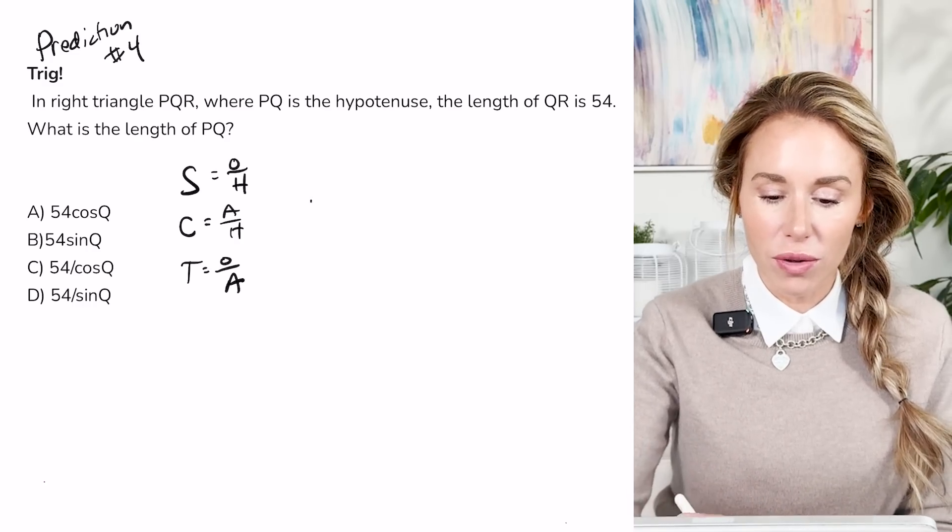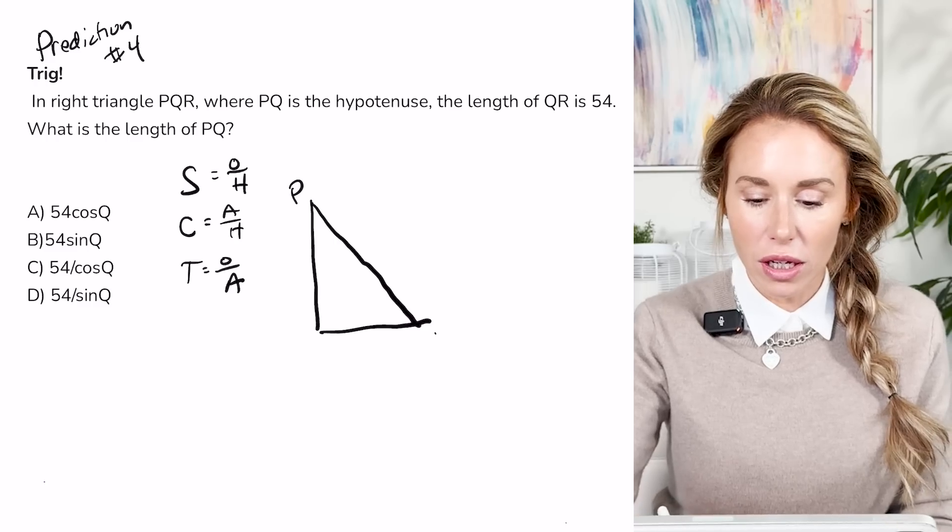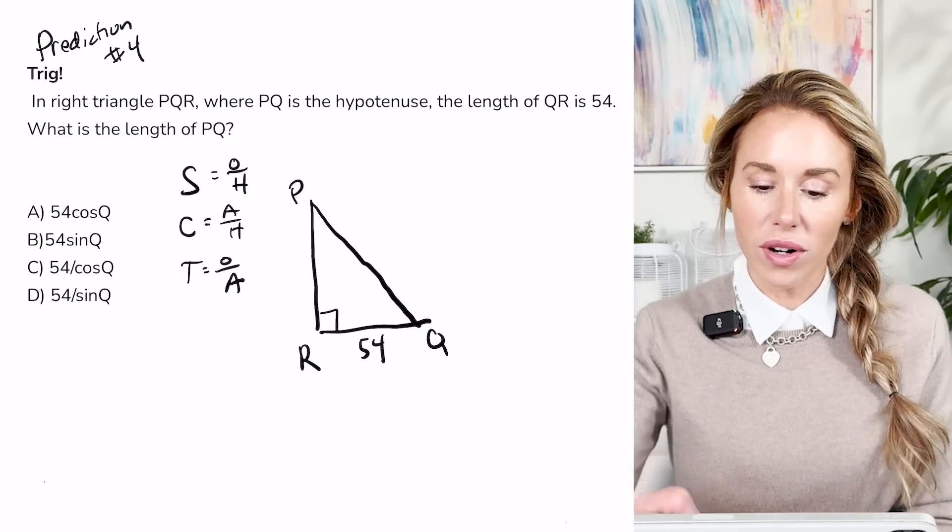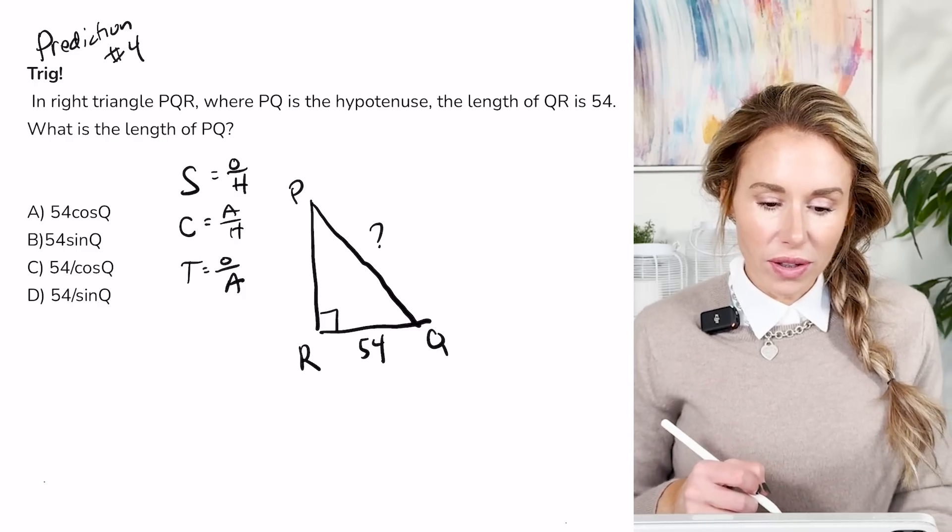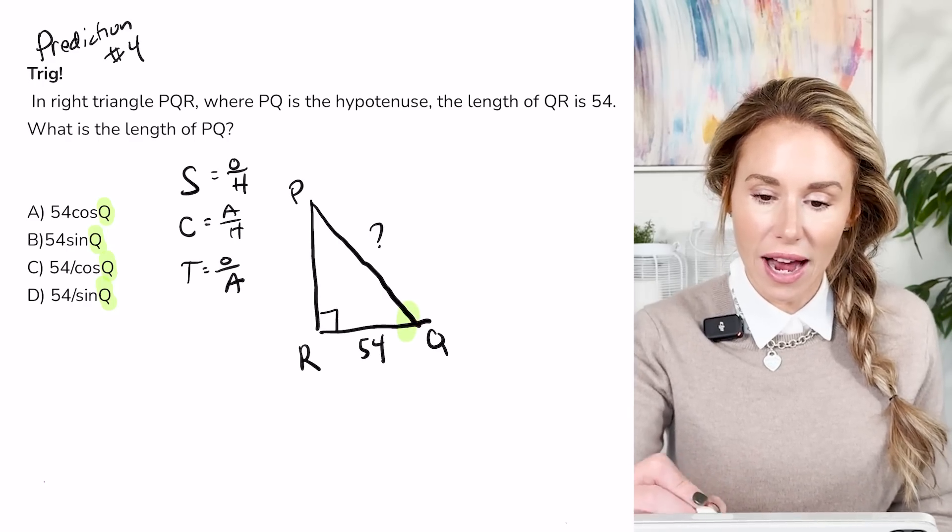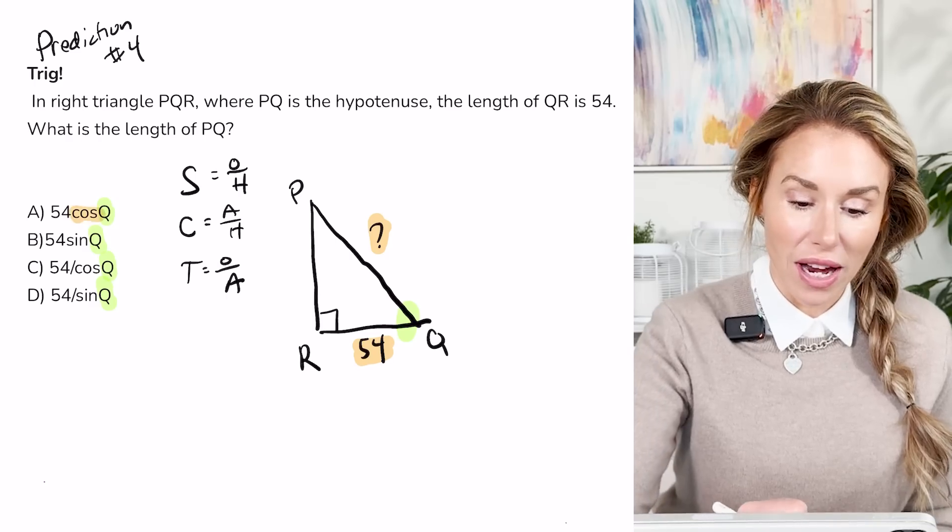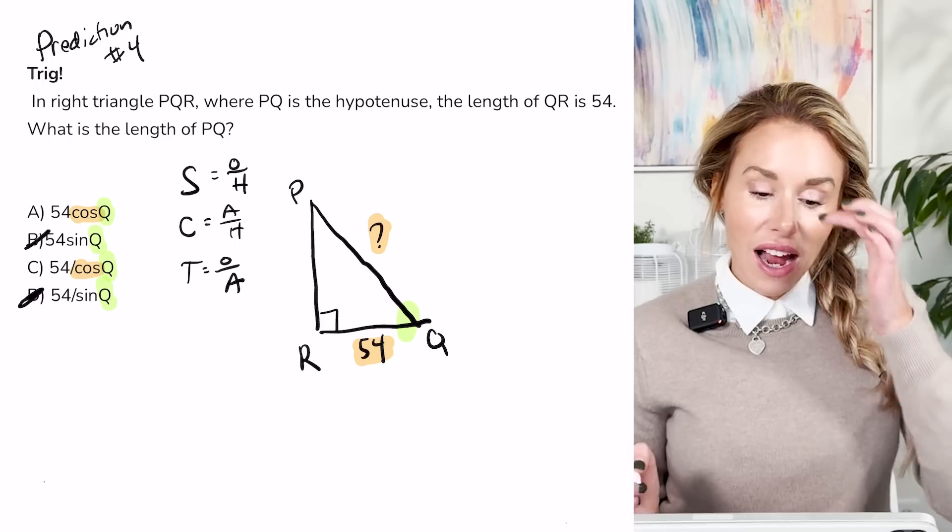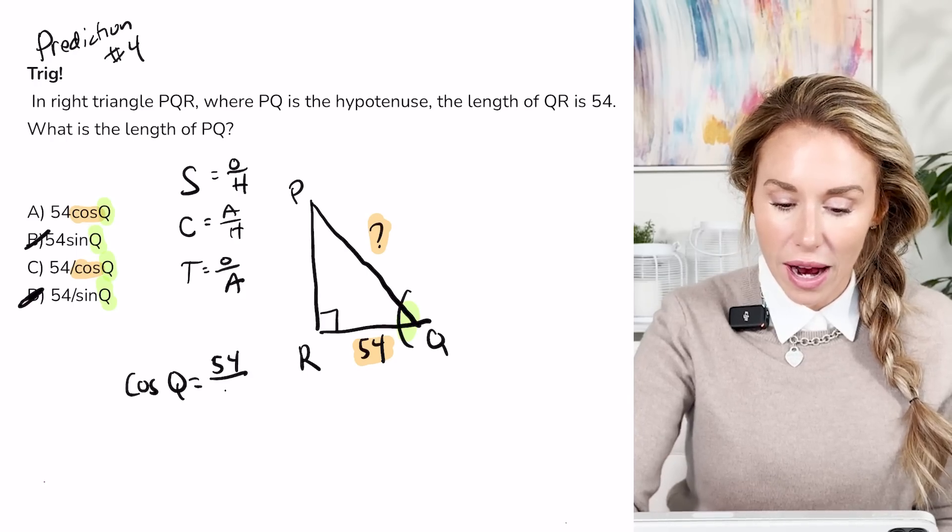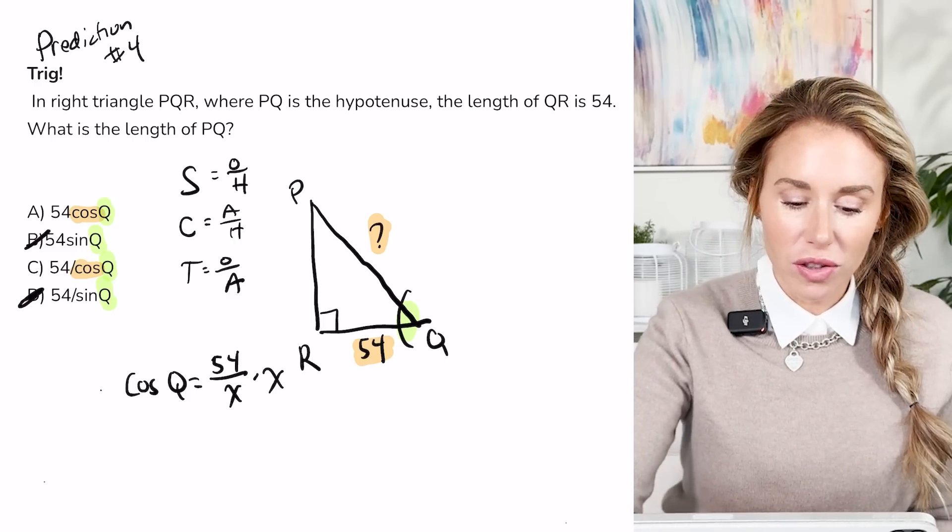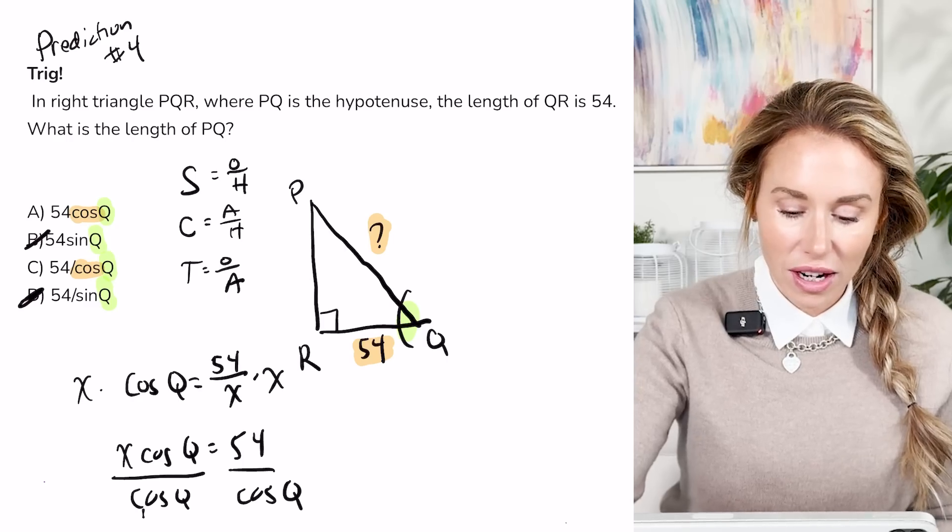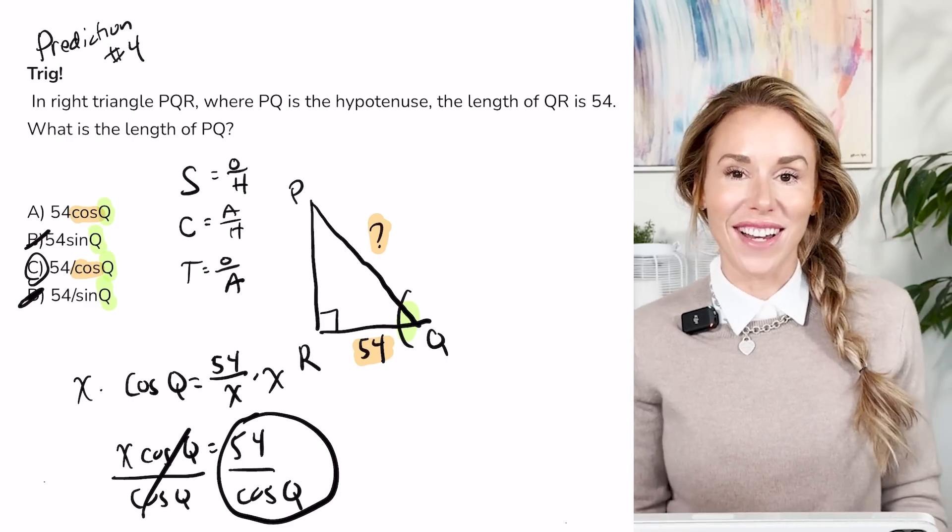So when they say in triangle PQR, PQ is a hypotenuse. So I'm going to make that happen right now. PQR is going to be the right angle. And then it says the length of QR is 54. So I'm going to write that in. And they want to know what is the length of PQ. Now, when you look at all the answer choices, it looks like the reference angle is Q. So we're going to go from this reference angle right here, Q. So that means we essentially have an adjacent and a hypotenuse. That's cosine. So I already know I'm going to get rid of B and D. And then I just have to set it up properly. So I'm going to say the cosine of Q equals 54 over X. We don't know the hypotenuse. When you solve for X, you multiply by X on both sides. So now you have X cosine Q equals 54. Then divide by cosine Q. And there you have it. Your hypotenuse is 54 over cosine Q, which is C.